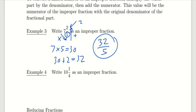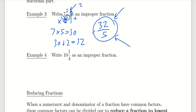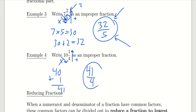To find the numerator, you multiply the whole part by the denominator and then add the numerator. That gives you the numerator of the improper fraction, placed over the original denominator. For example, to change 10 and 1 fourth to an improper fraction, we take 10 times 4 to get 40, then add the numerator 1, giving us 41. So the improper fraction is 41 over 4.